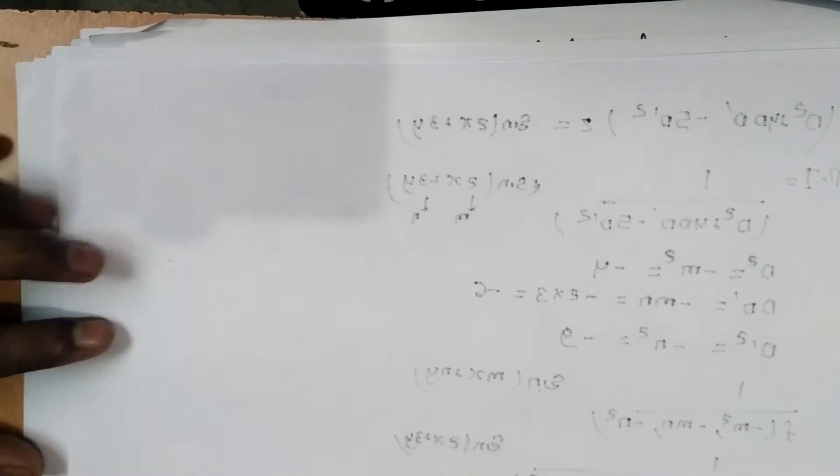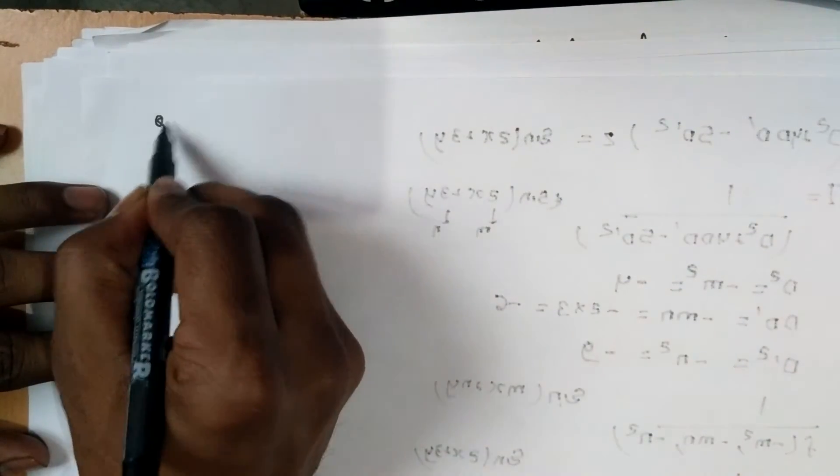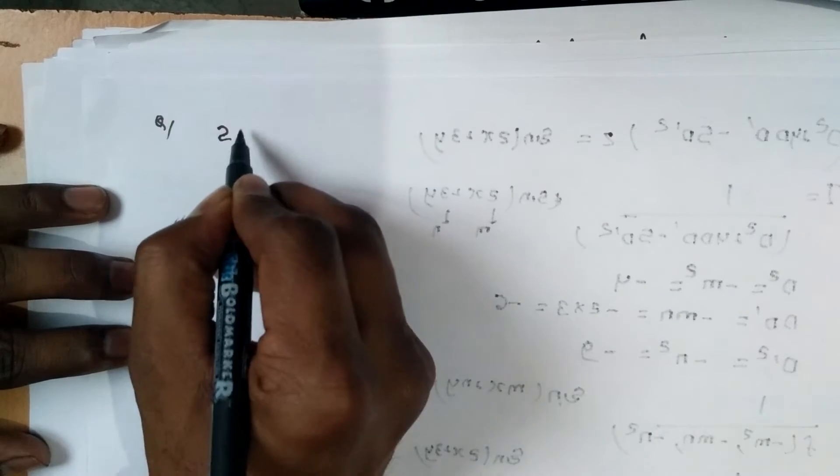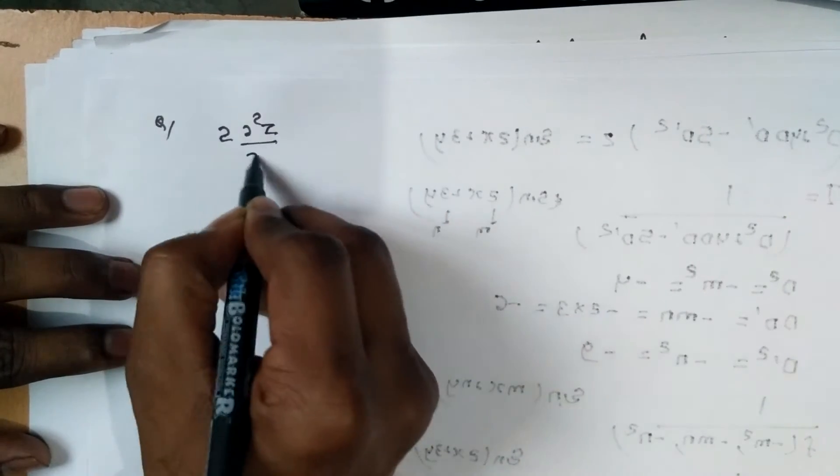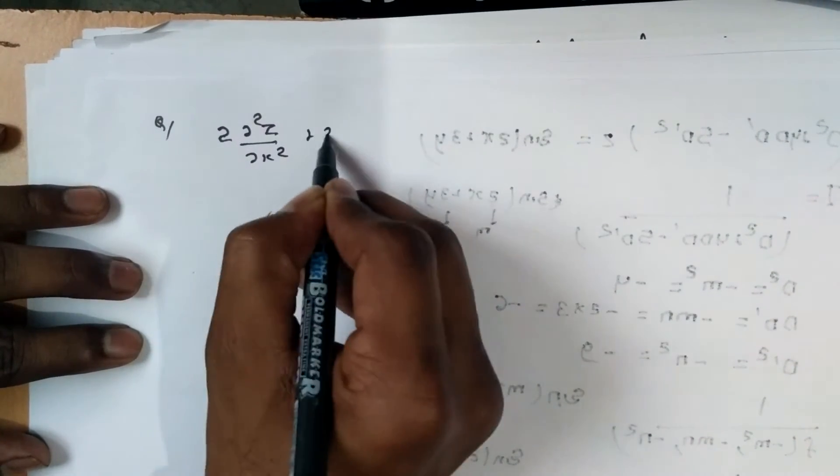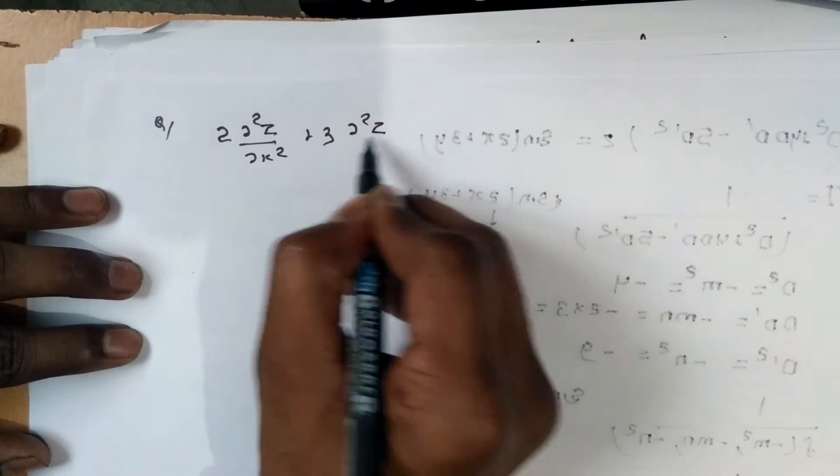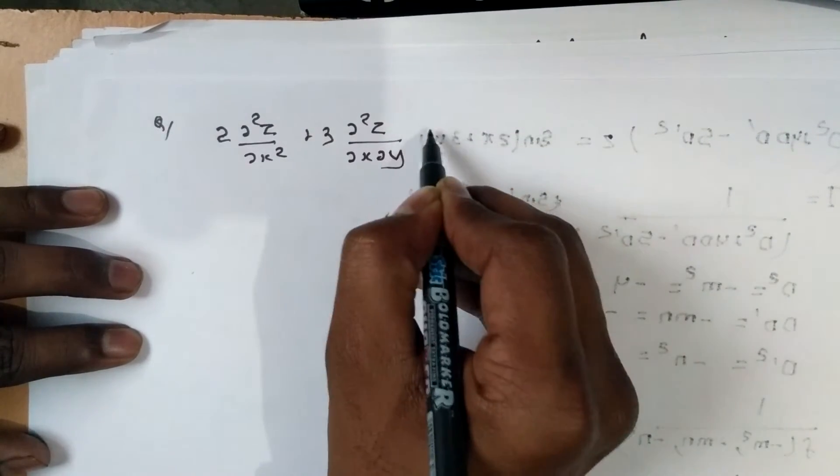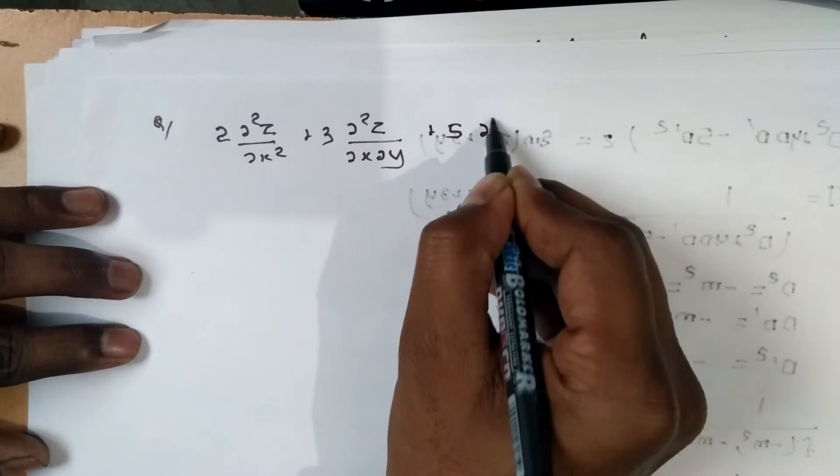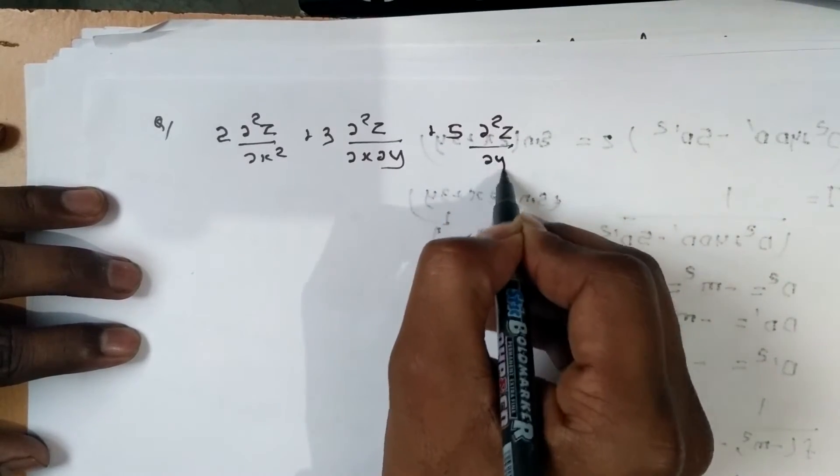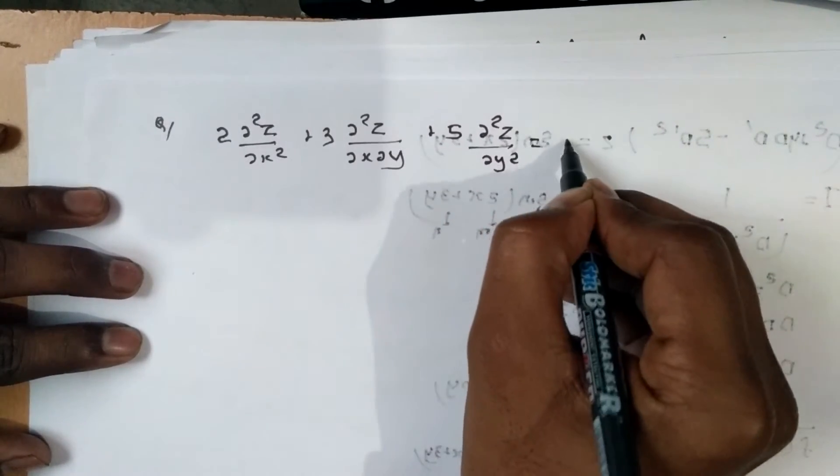Now we have another example: 2∂²z/∂x² + 3∂²z/∂x∂y + 5∂²z/∂y² = e^(2x+3y).